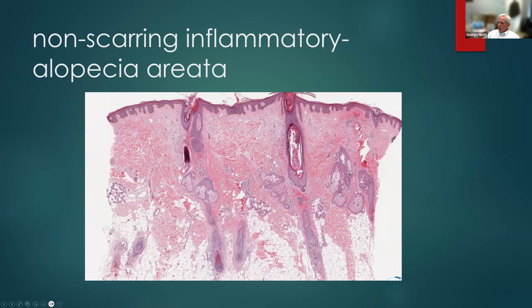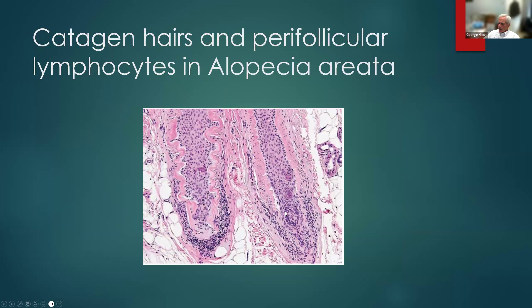Here's our classic lesion of alopecia areata. We have plenty of hairs — one, two, three, four, five, six, seven hairs — and all the hairs are starting to regress at the same stage of devolution, as Bernie Ackerman used to say. This is the histologic correlate of what we see clinically: you don't lose one hair at a time — the whole spot goes bald more or less at once, because all hairs enter catagen or telogen phase at the same time. In this particular case, there's a little bit of inflammation around the hair bulbs but not overly abundant. One thing to look for in alopecia areata is the thickened basement membranes of the catagen hairs, and of course the inflammatory cells around the dermal papillae.